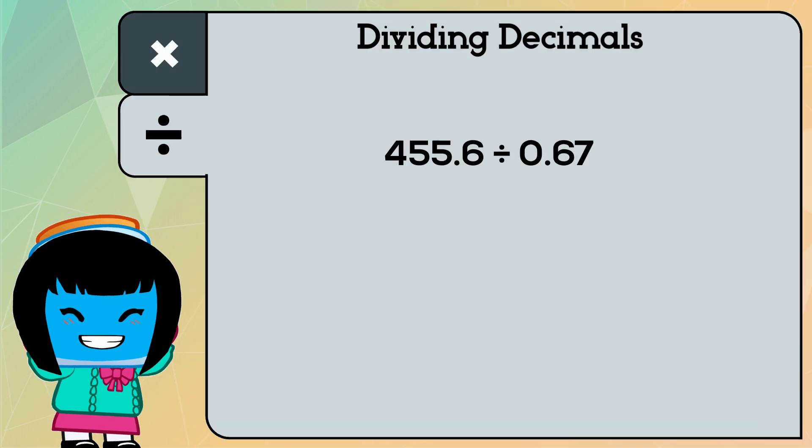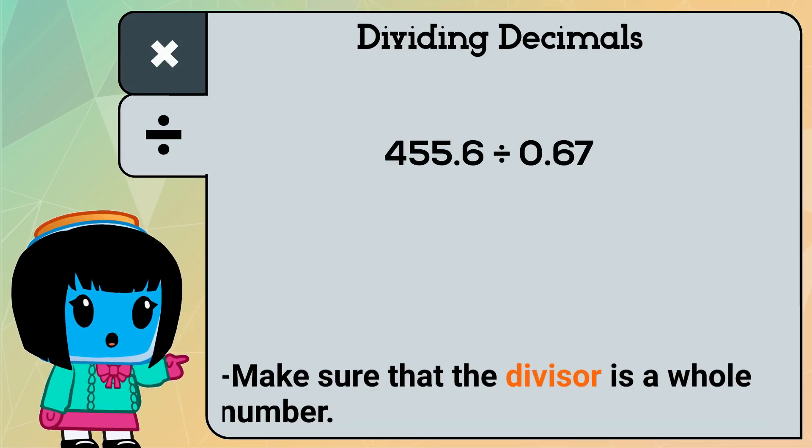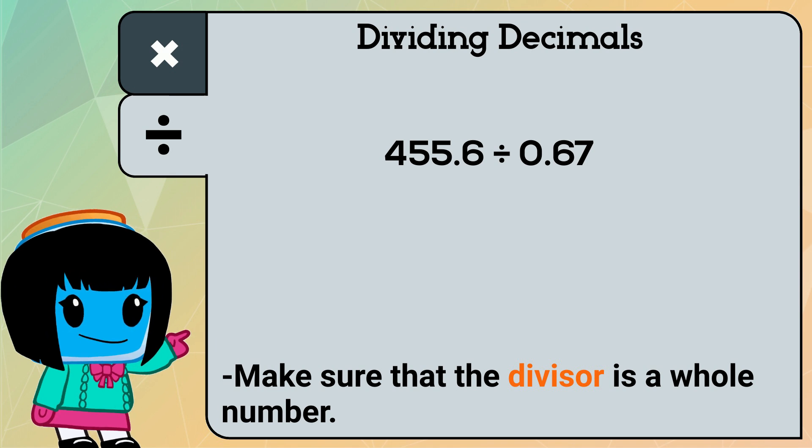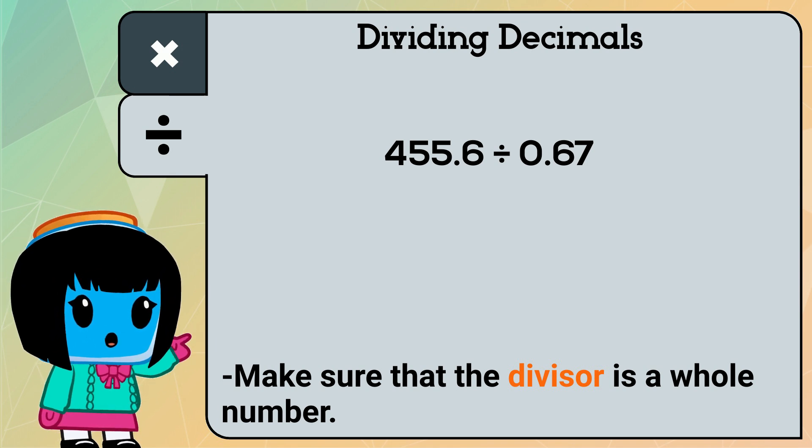Now let's try division. When dividing by decimal, we need to make sure that our divisor is a whole number. Our divisor in this problem is 67 hundredths.